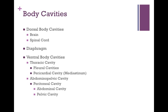Know the body cavities. There's the dorsal body cavity and the ventral body cavity. The dorsal body cavity contains cavities that house the brain and the spinal cord — the cranial cavity houses the brain, and the vertebral cavity houses the spinal cord. In the ventral body cavities, there's the thoracic cavity and the abdominal pelvic cavity. The diaphragm is a muscle that divides and separates the thoracic cavity from the abdominal pelvic cavity.